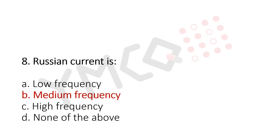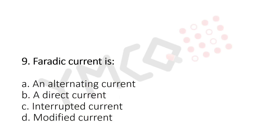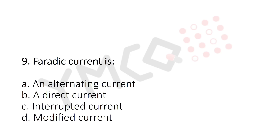Question 9: Faradaic current is — option A: alternating current; option B: direct current; option C: interrupted current; option D: modified current. The answer is option C: interrupted current.